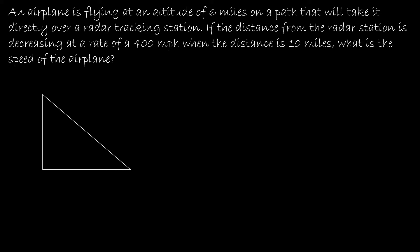Let's get started, keeping in mind that I'm going to have a set of static values and a set of variable values. I'm going to use S to represent distance — that's the hypotenuse. I'm going to use A for altitude and B for this horizontal distance. Which means that if I have S, A, and B, I should also have dS/dt, dA/dt, and dB/dt. Those will change based on whatever letters you chose to represent each side.